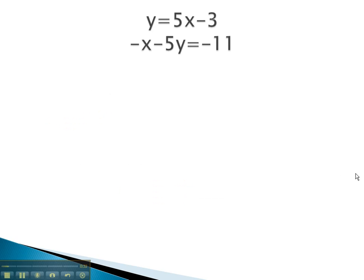So, for example, in this system of equations, again, we see y is equal to something. It's just equal to an expression, 5x minus 3. This means the y in the other equation is also equal to that expression, 5x minus 3. So we can replace the y in that expression with 5x minus 3. This gives us negative x minus 5y, which now becomes 5x minus 3, equals negative 11.